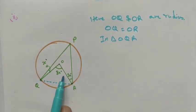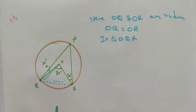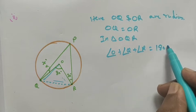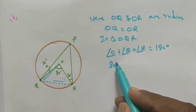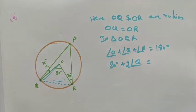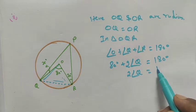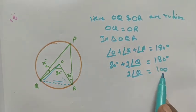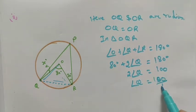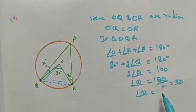Since OQ and OR are equal radii, triangle OQR satisfies the isosceles condition. In an isosceles triangle, two angles are equal. So angle O plus angle Q plus angle R equals 180 degrees. Angle O is 80 degrees, so 2 times angle Q equals 100 degrees, which gives angle Q equals 50 degrees.